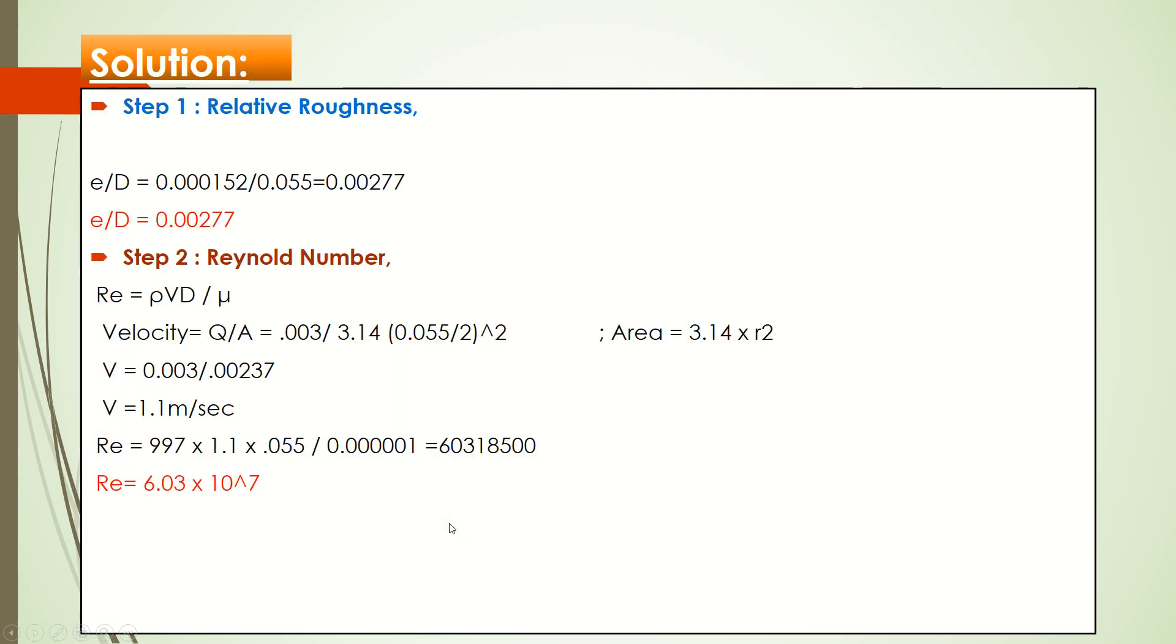First, we need to calculate relative roughness and Reynolds number, because when you get these two values, you are able to use the Moody chart. Relative roughness is pipe roughness divided by inner diameter of the pipe. You get 0.0027 relative roughness. For Reynolds number, you have all the values but you don't have velocity.